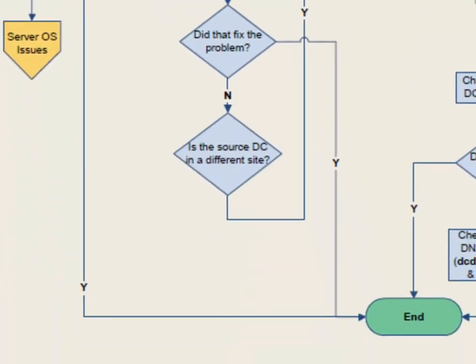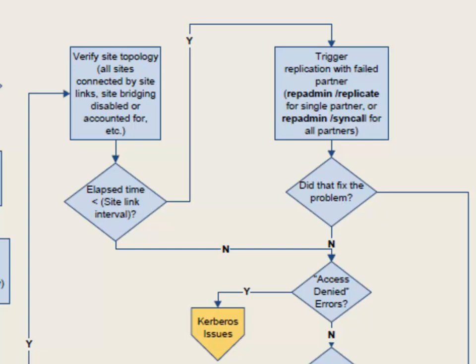If that fixed the problem, you jump straight to the end — pass go, collect $200, all that sort of good stuff. If that didn't solve the problem, go back and look at whether the source DC is in a different site than the target DC. We're now moving into looking at the site topology. You need to verify the site topology: are all the sites connected by site links? Do you have site link bridging disabled, or has someone added a manual site link that has changed the replication pathways?